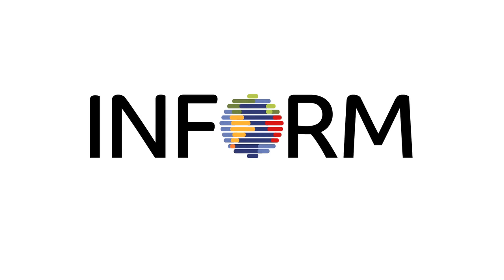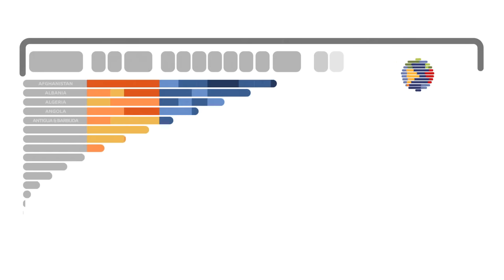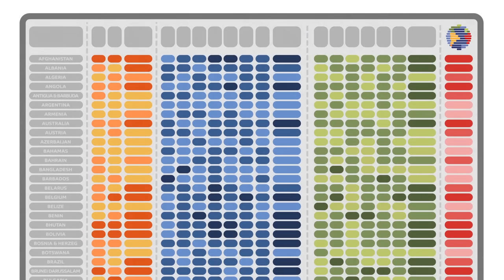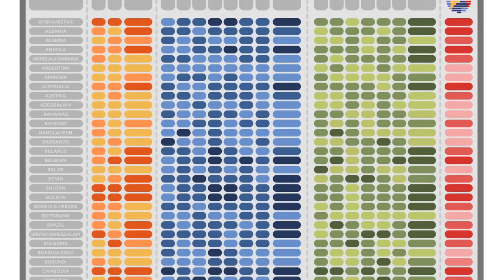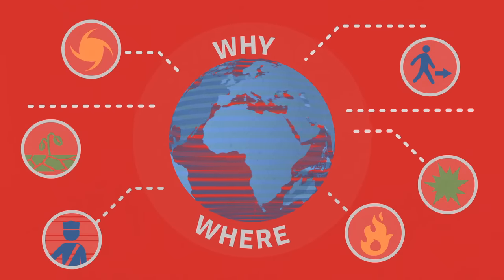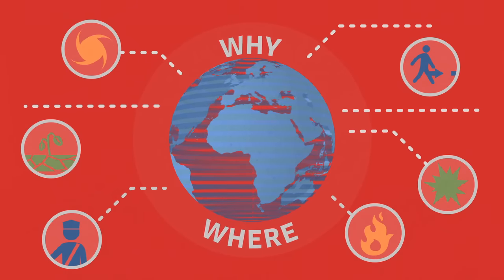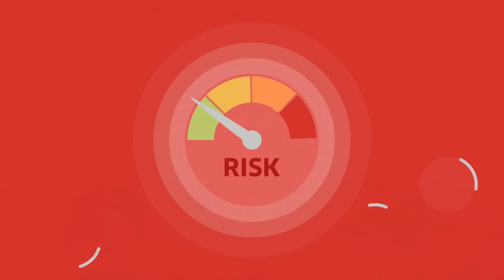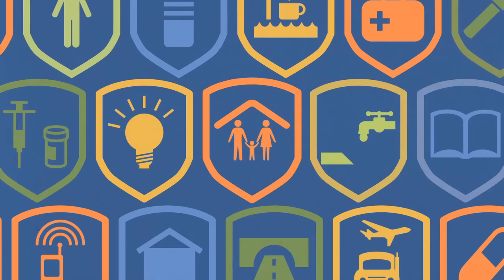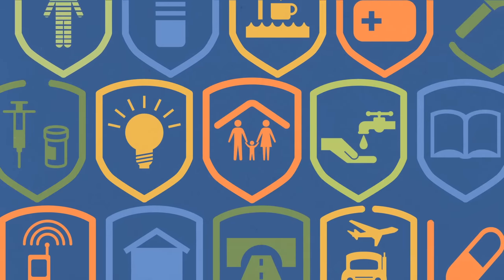INFORM stands for Index for Risk Management. It's a new way to measure the risk of humanitarian crises and disasters. INFORM can help identify where and why a crisis might occur, which means we can reduce the risks and build people's resilience and better prepare for when crises do happen.